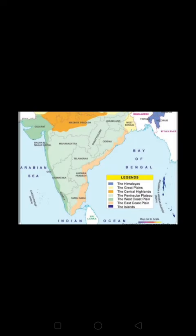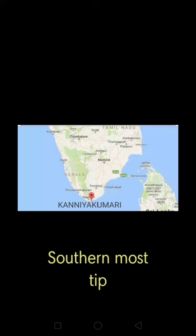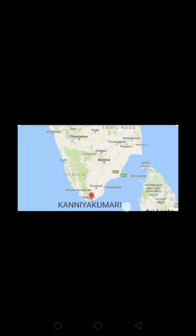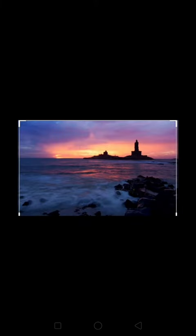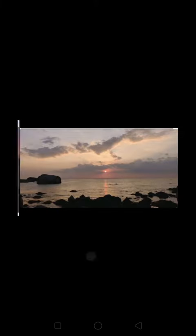The states which lie within the Eastern Coastal region are parts of Tamil Nadu, Andhra Pradesh and Odisha. The southernmost tip of the mainland of India is known as Kanyakumari. It is well known for its beautiful sunrise and sunset.